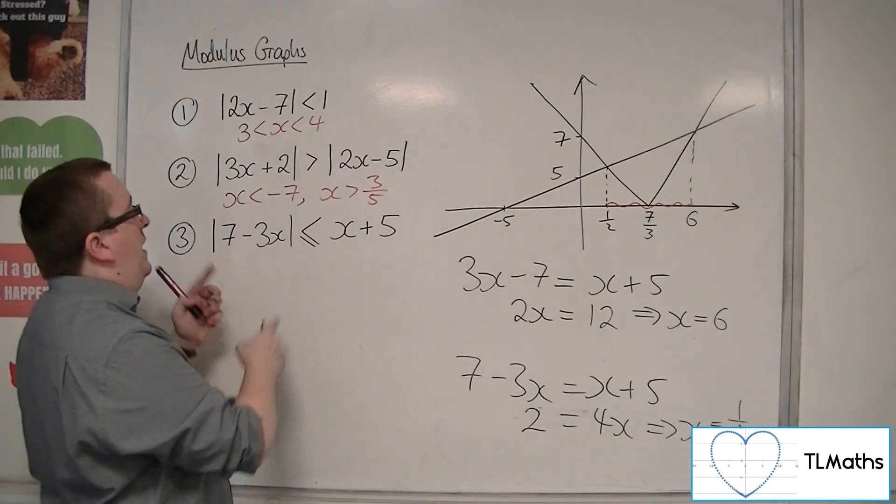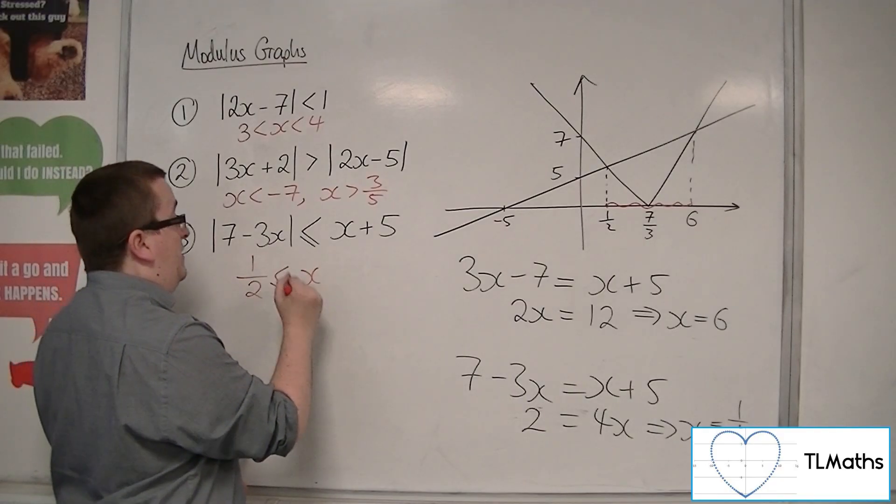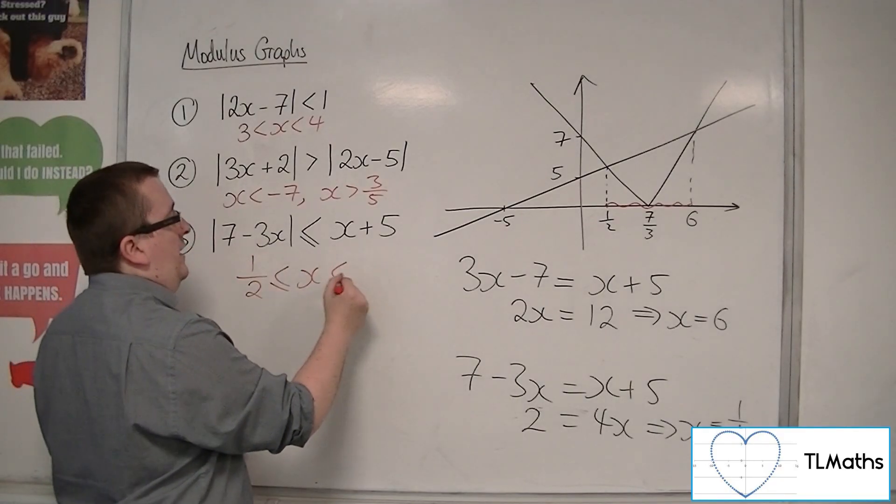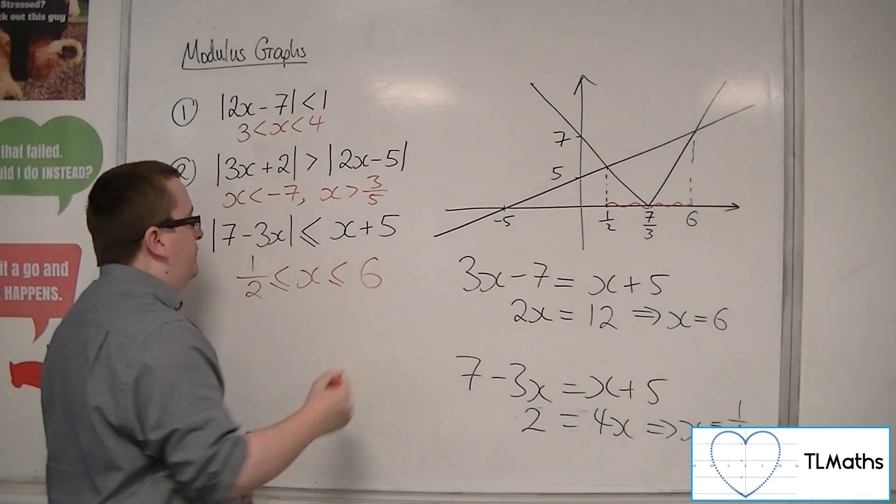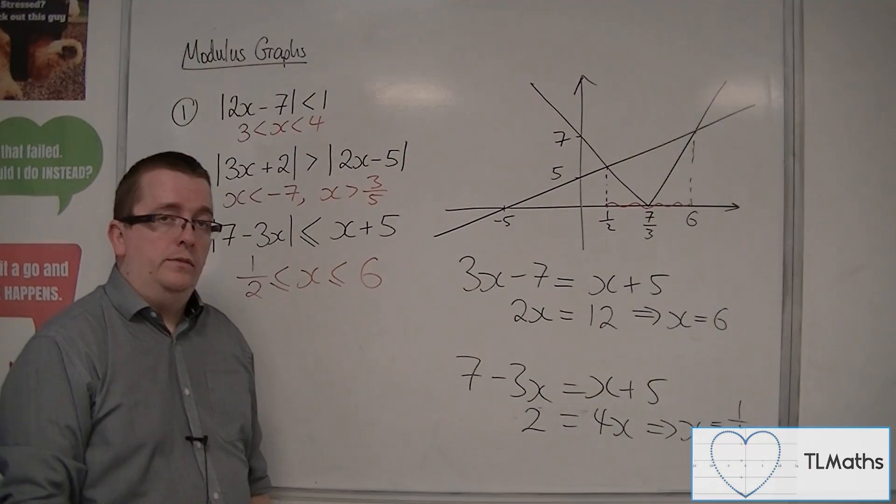And so, this inequality is solved by a half is less than or equal to x, sorry, is less than or equal to 6. And that's how you can deal with inequalities with modulus graphs. So, this is what's going on. Thank you.